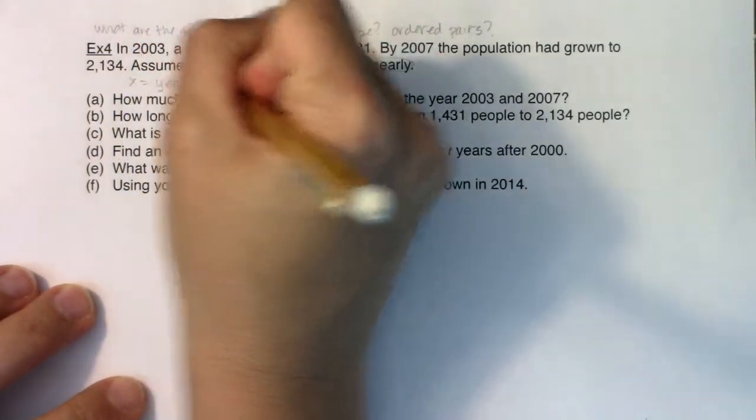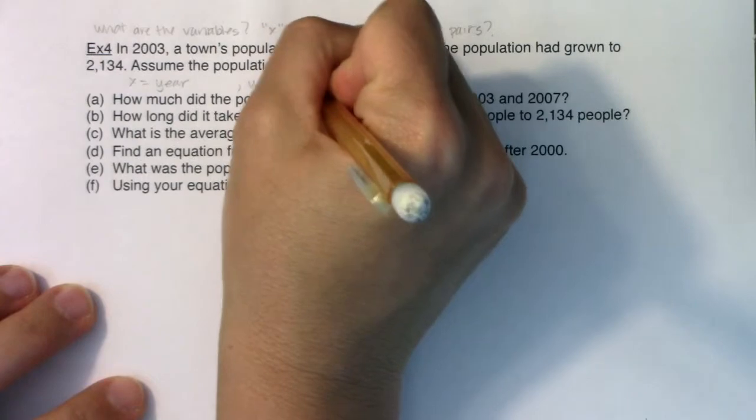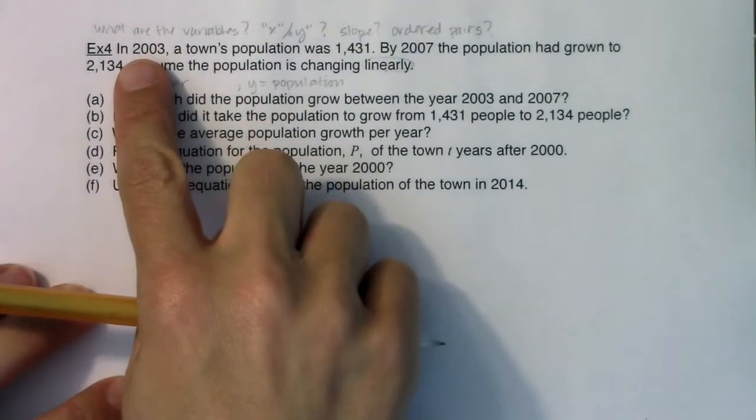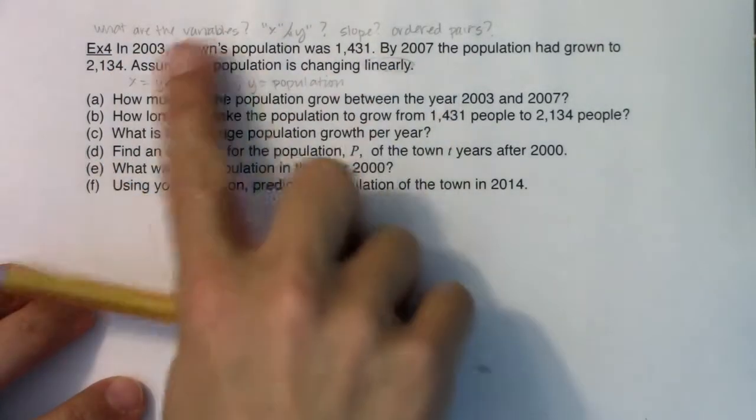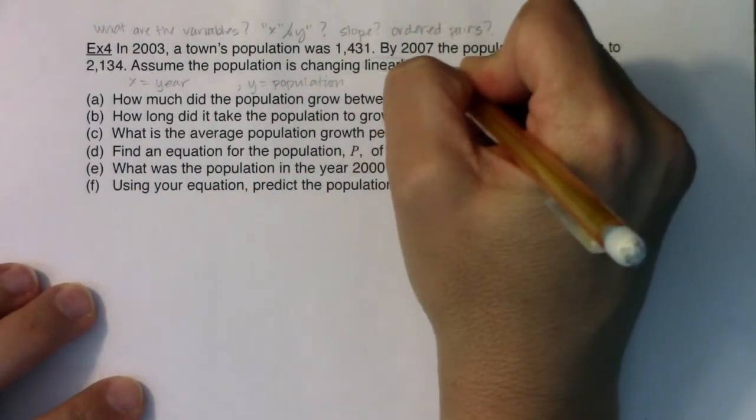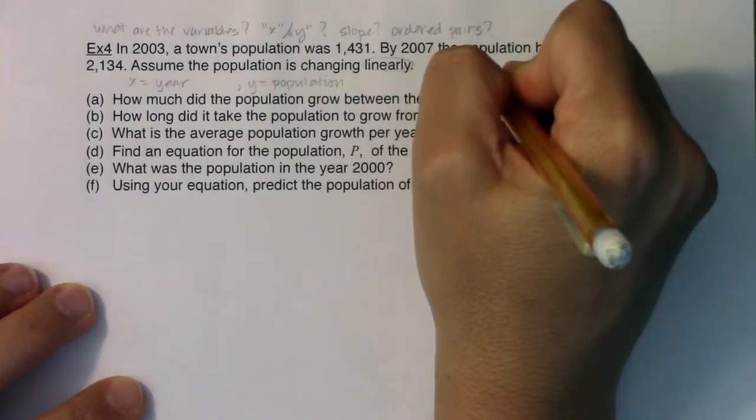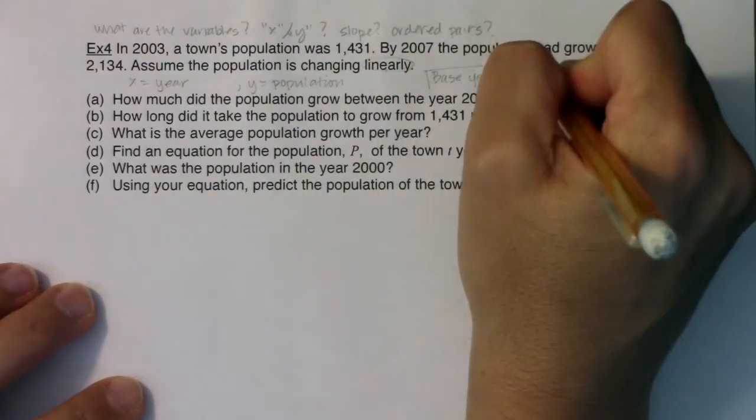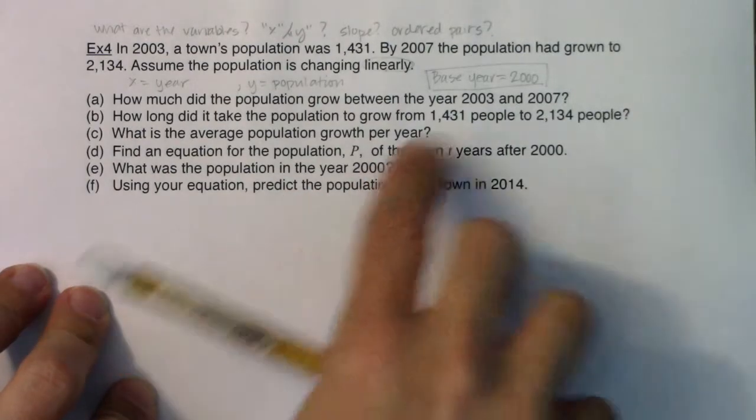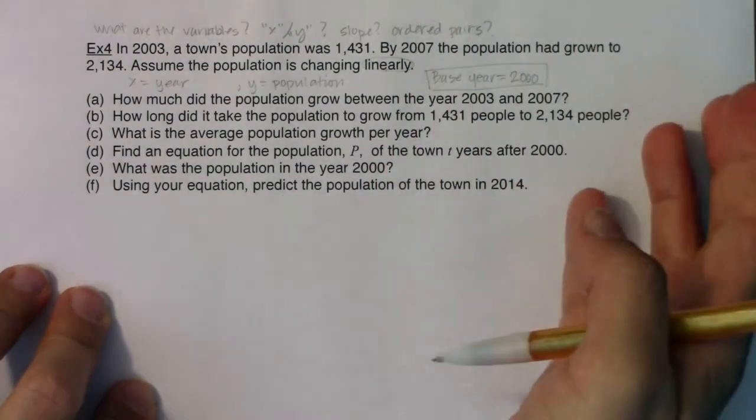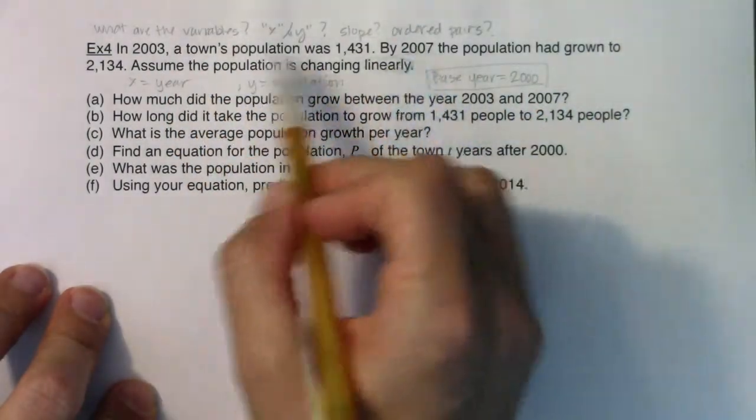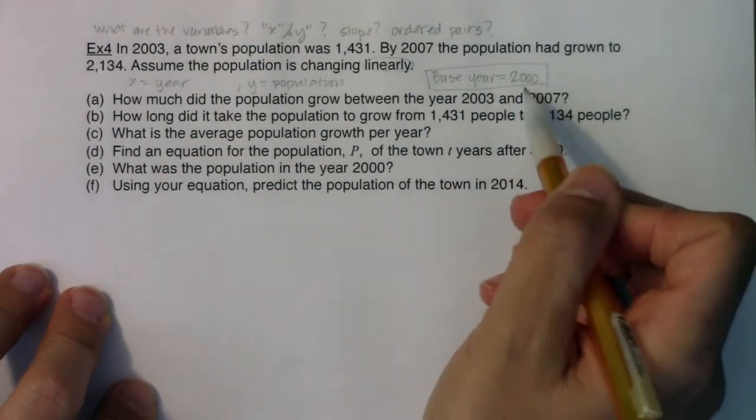Now I want to talk about using a base year here because 2003, 2007, those are big numbers. I'm going to use a base year. I'm going to elect to use 2000. So I'm going to set a base year of 2000 going in on this problem. You don't have to do this. You don't have to pick a base year, and even if you pick a base year, it doesn't have to be 2000. You could pick 1900, you could pick 2003 itself, you could pick 2010.